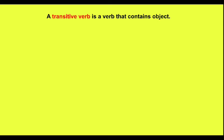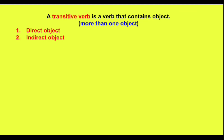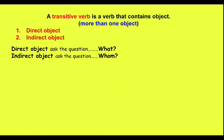Now we'll learn about transitive and intransitive verbs. A transitive verb is a verb that contains an object. It contains more than one object — that will be a direct and an indirect object, as we have seen in the previous slides. Direct object asks 'what' and indirect object asks 'whom'.